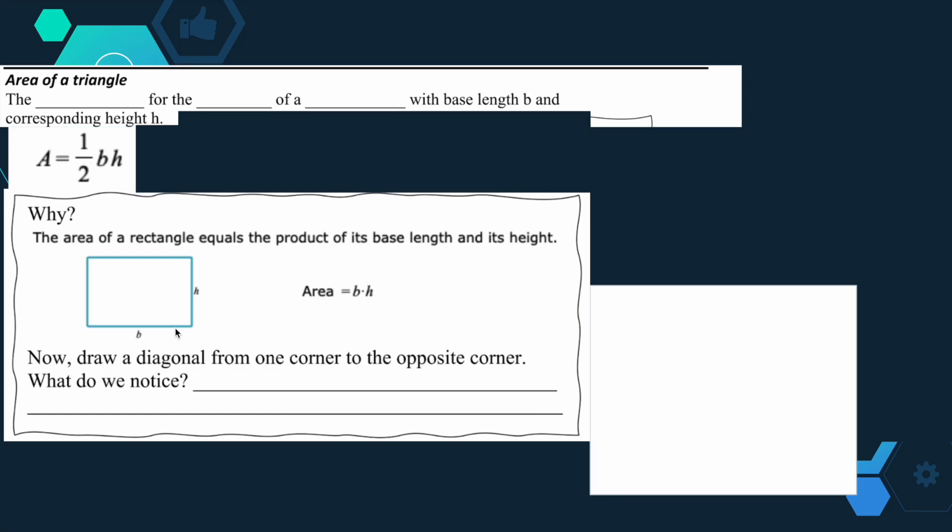Let's take a look at area of a triangle. The formula for the area of a triangle with base b and corresponding height h is area equals one half times the base times the height.